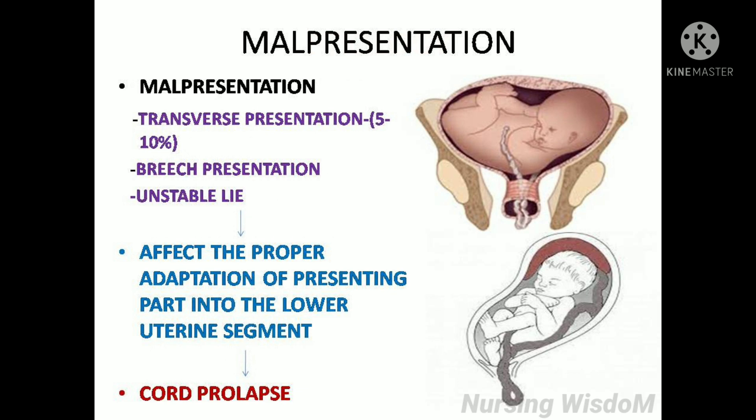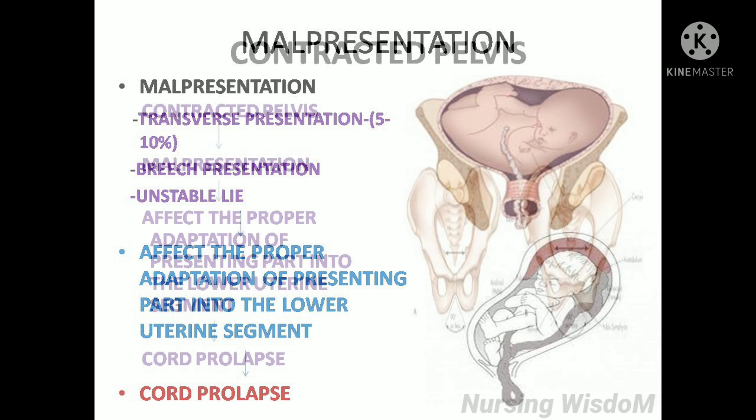Malpresentation such as transverse presentation contributes 5 to 10 percent. Breech presentation and unstable lie are all factors that affect the proper adaptation of the presenting part into the lower uterine segment. This increases the chance of cord slippage and leads to cord prolapse.